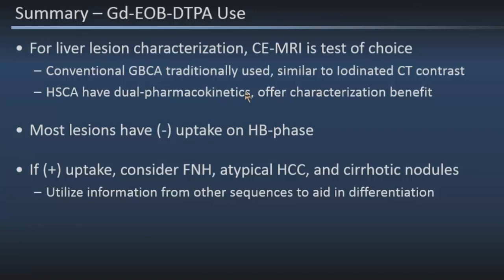In summary, Gad-EOB-DTPA is a novel contrast agent with dual pharmacokinetics, and it's important to understand how those pharmacokinetics influence the image. Most lesions in the liver have low uptake on the hepatobiliary phase and don't add characterization value. Some lesions do have striking uptake — those are really FNH, atypical HCCs, and sometimes cirrhotic nodules. Remember to look at the other sequences to verify or help make the diagnosis rather than relying on this sequence alone.